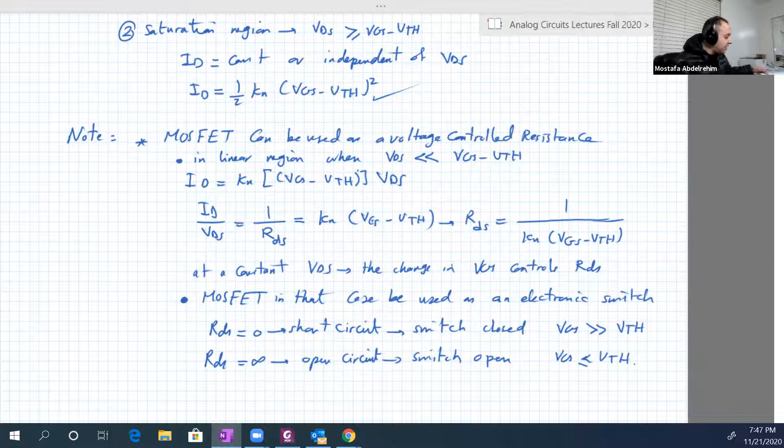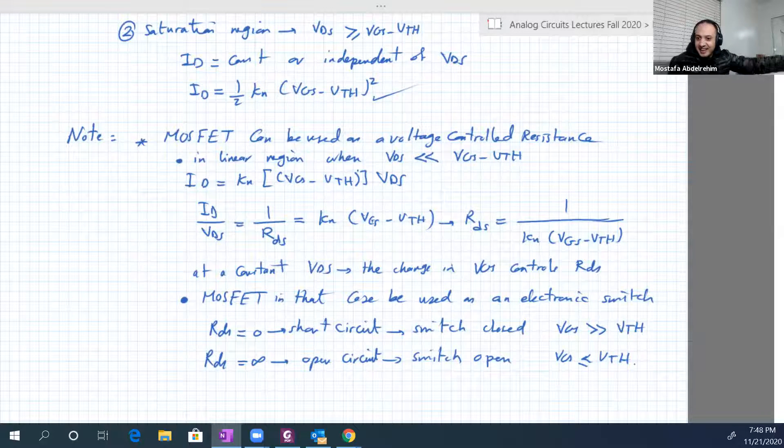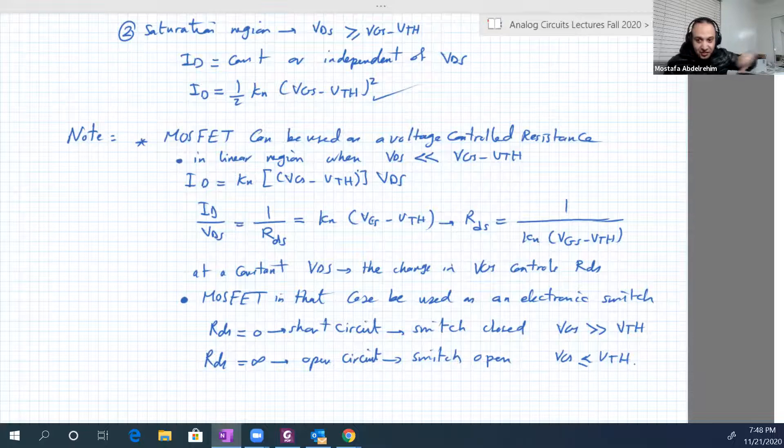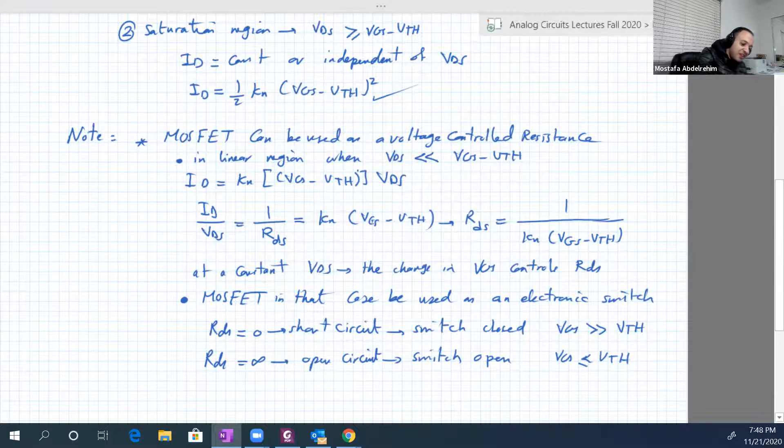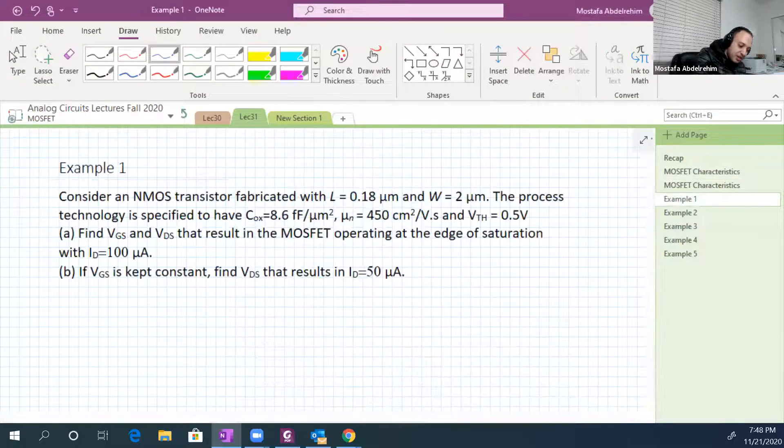Now let's apply all that information on characteristics and equations in DC circuits that will be used later for biasing amplifiers, for example. So let's have examples now. Let's go to the first example.